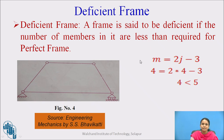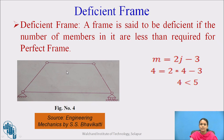A deficient frame is one where the number of members is less than required for a perfect frame. For example, a frame with 4 members and 4 joints gives m = 2(4) − 3 = 5, but m = 4, which is less than 5. So the members are fewer than required, and it is called a deficient frame.